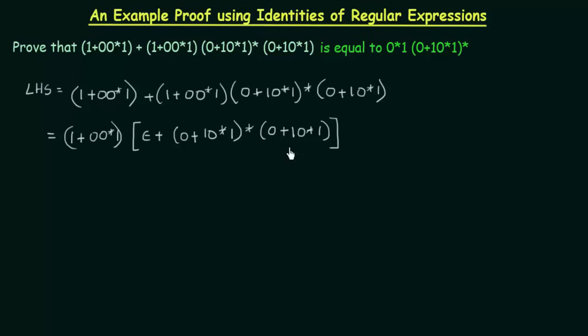Now if you look at this expression, you see that these two terms are the same. 0+10*1. Here also it is 0+10*1. And over here we have a star. Now, if you recall the identities that we have studied, we have already studied that epsilon + R* R is equal to R*. Where R is any regular expression.